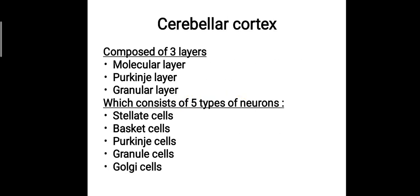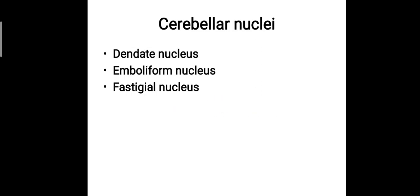The cerebellar cortex is composed of three layers: an outermost molecular layer, the second Purkinje layer, and then the granular layer. These three layers are composed of five types of neurons: stellate cells, basket cells, Purkinje cells, granule cells, and Golgi cells. These are the components of the cerebellar cortex. The cerebellar nuclei include the dentate nucleus, emboliform nucleus, and fastigial nucleus.